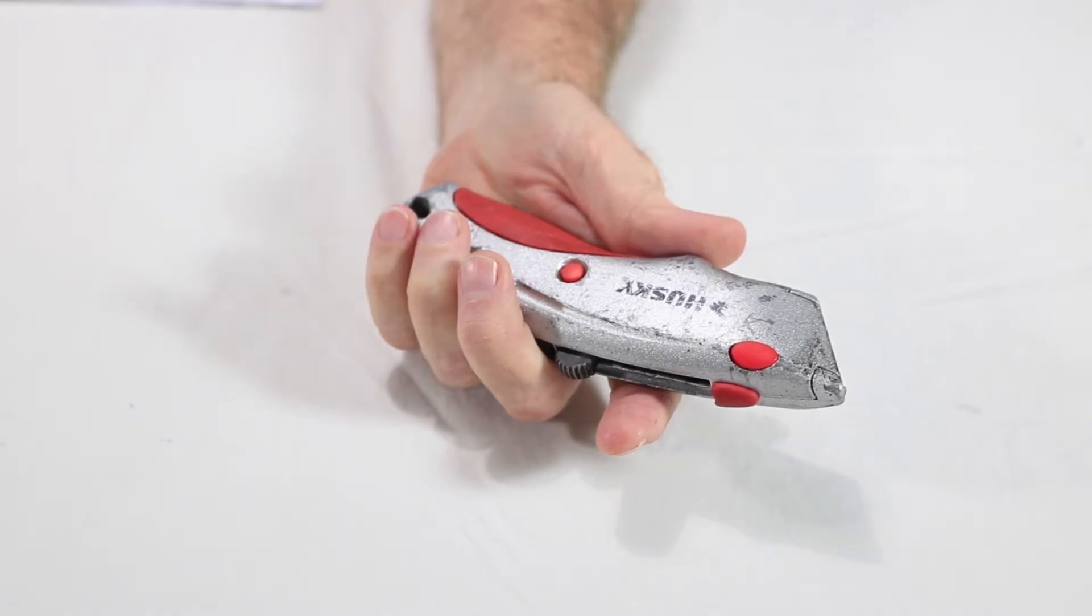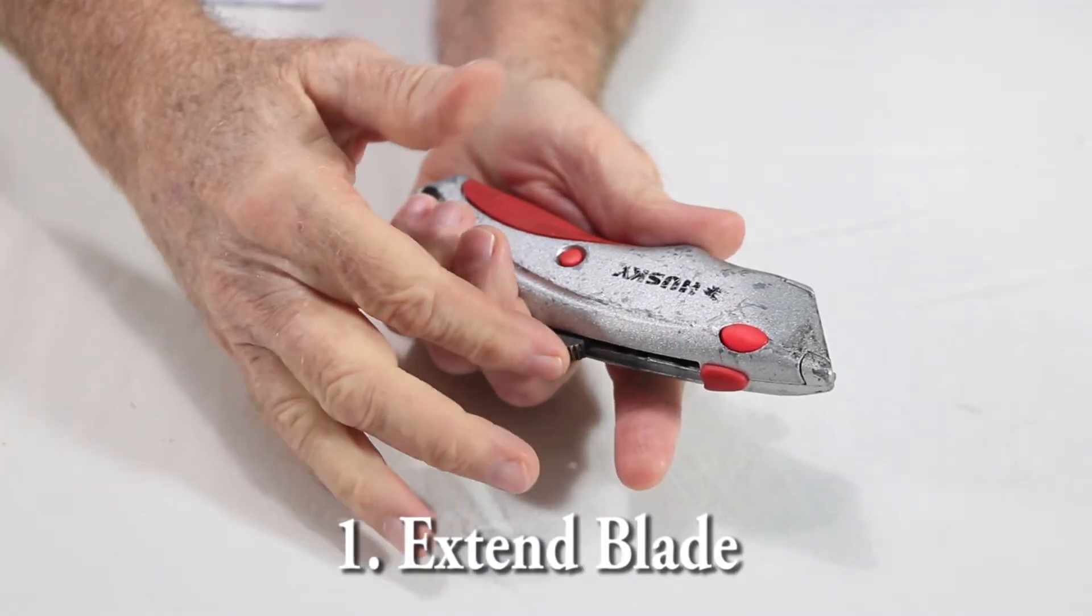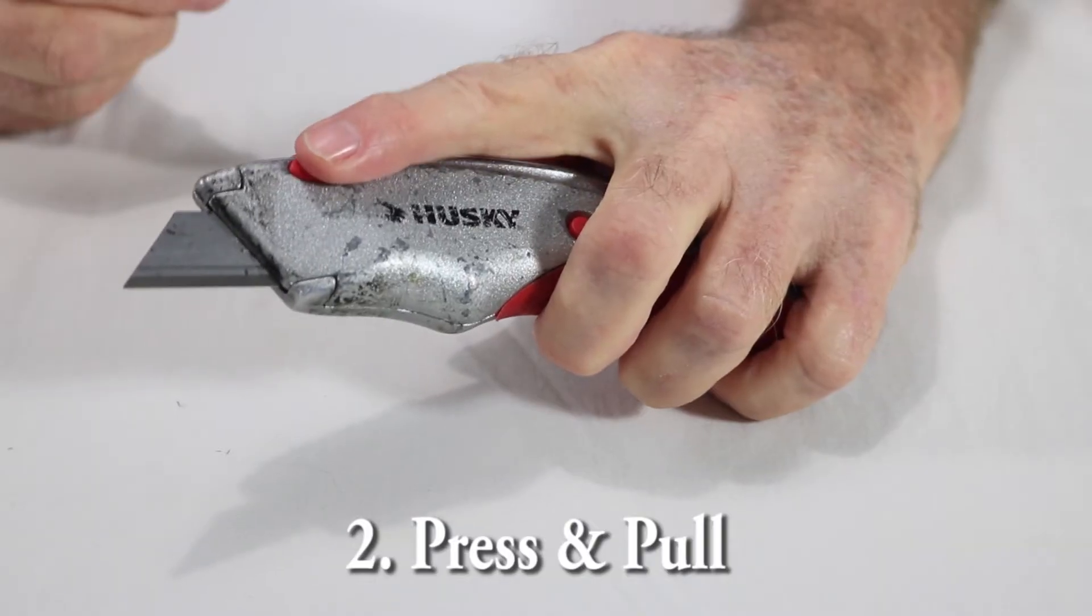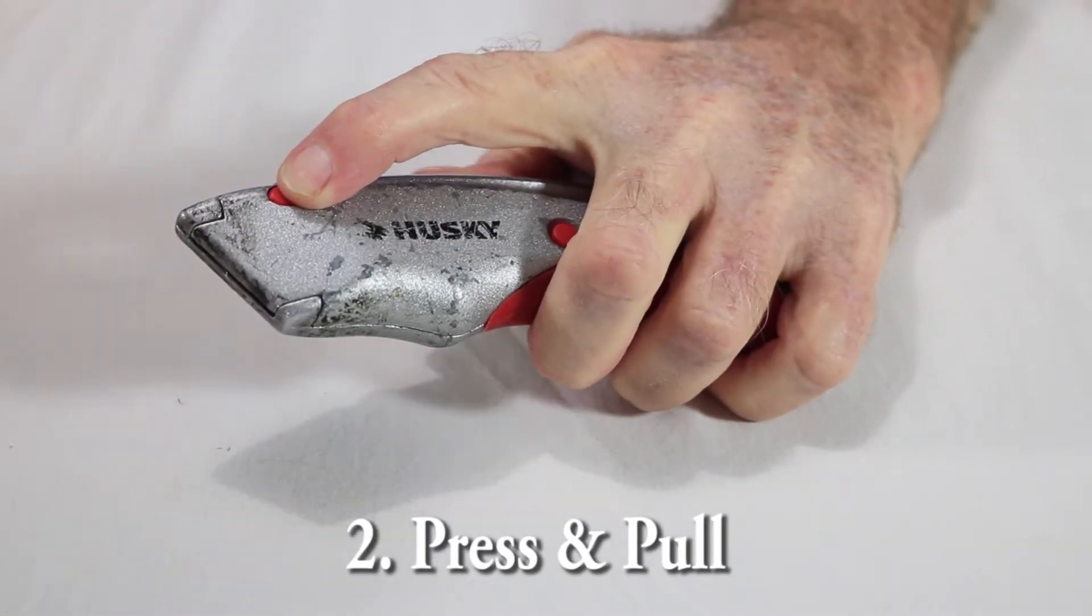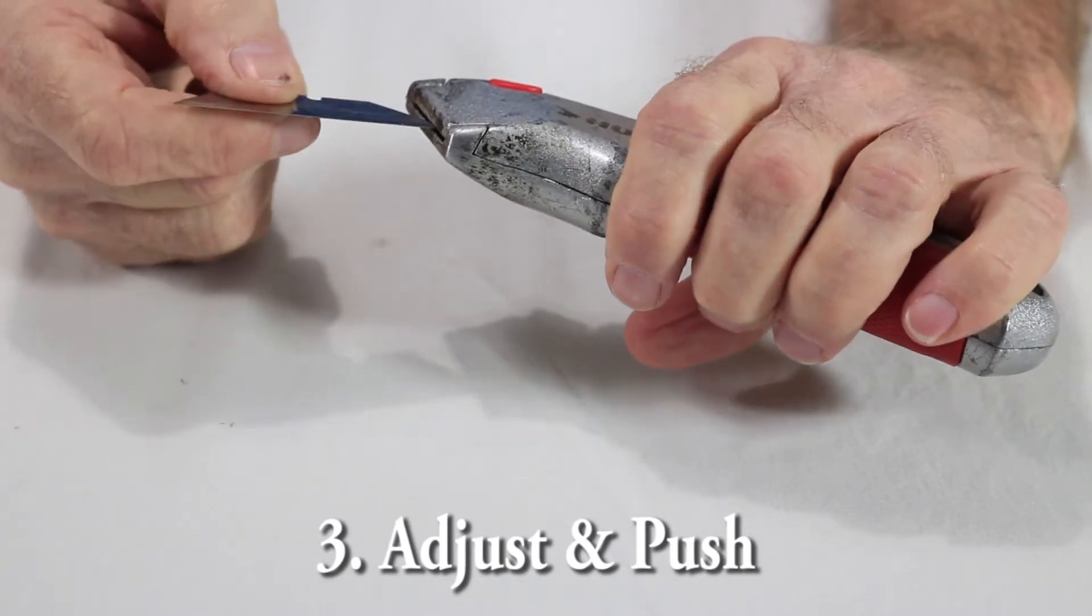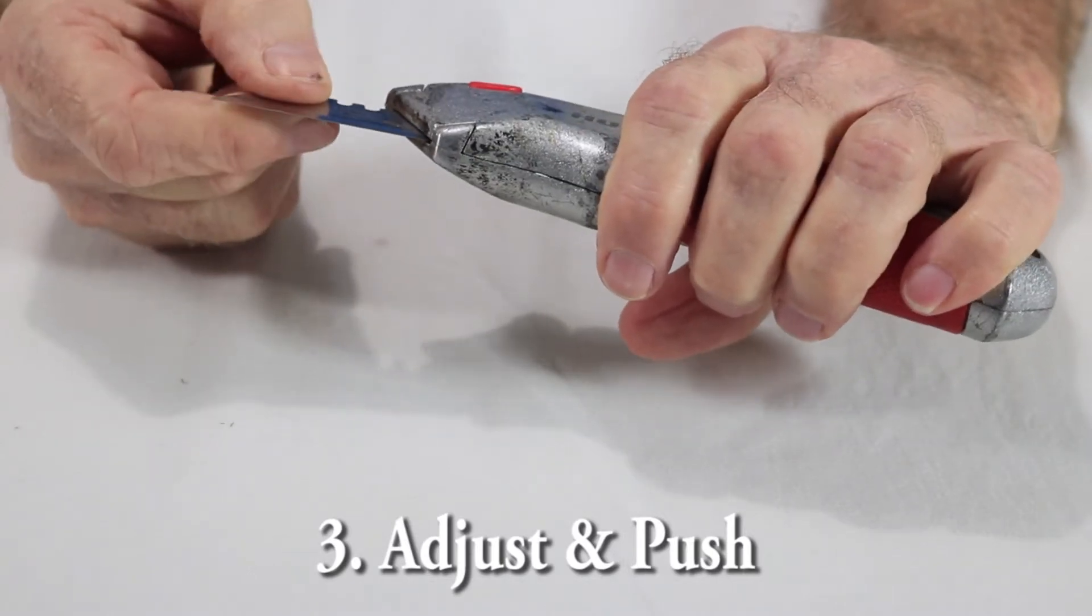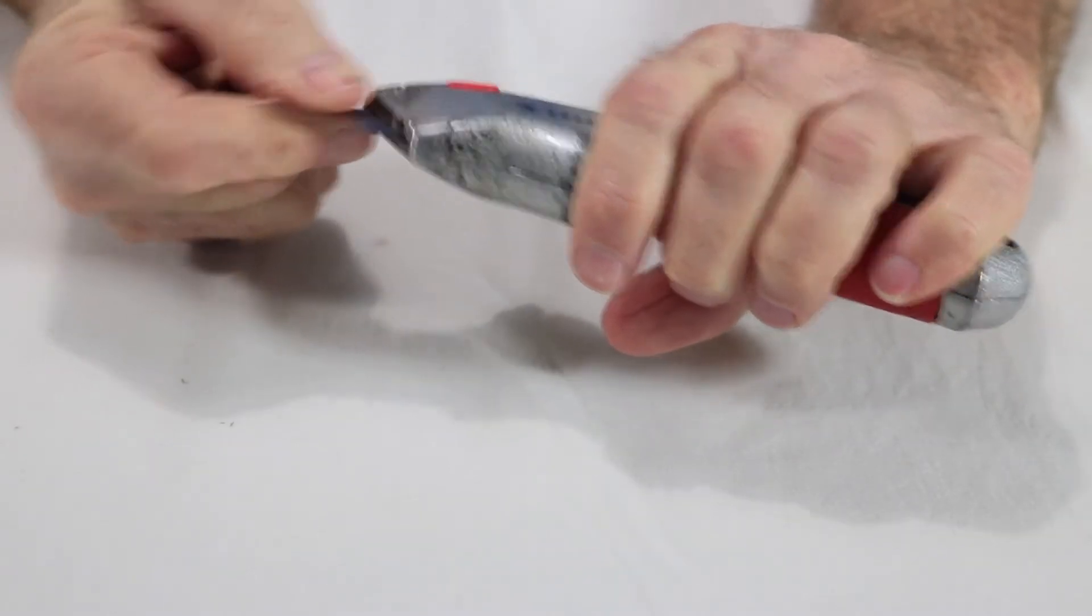To swap Husky blades you extend the blade all the way out, press the red button and then pull out the blade. To put the new blade in, get the edge back inside the handle, adjust the angle until it slides all the way in.